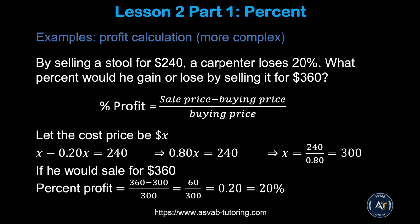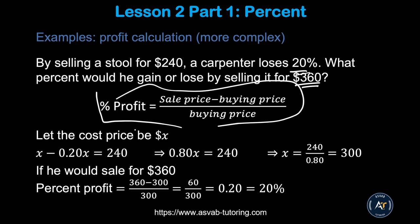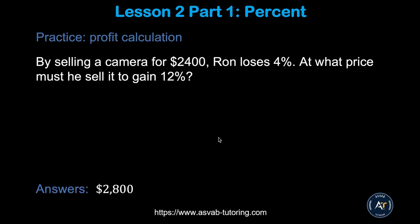Here's a more complex profit problem: a carpenter sells a tool for $240 and loses 20%. What percent would he gain or lose by selling it for $360? First, find the cost price: if selling at $240 represents a 20% loss, then 240 = cost × (1 − 0.20), so cost = $300. Now use the profit formula: (360 − 300) / 300 × 100 = 60/300 × 100 = 20% profit. Selling at $360 gives a 20% gain.